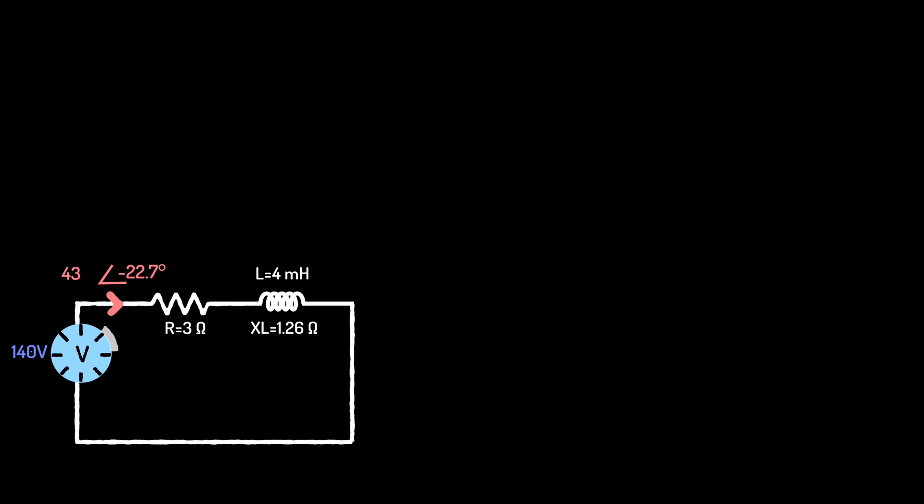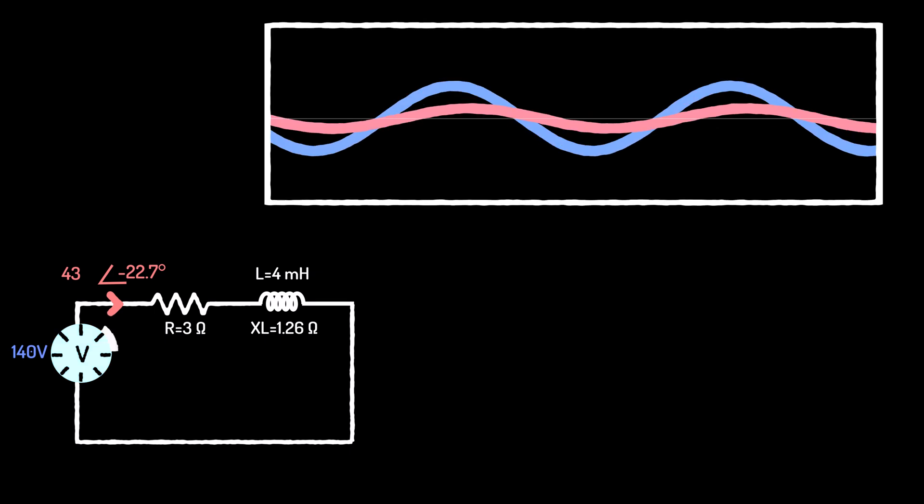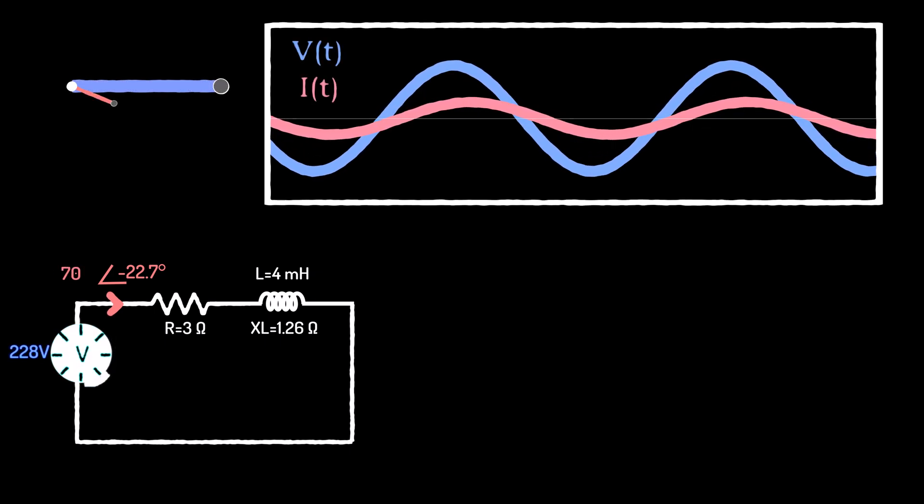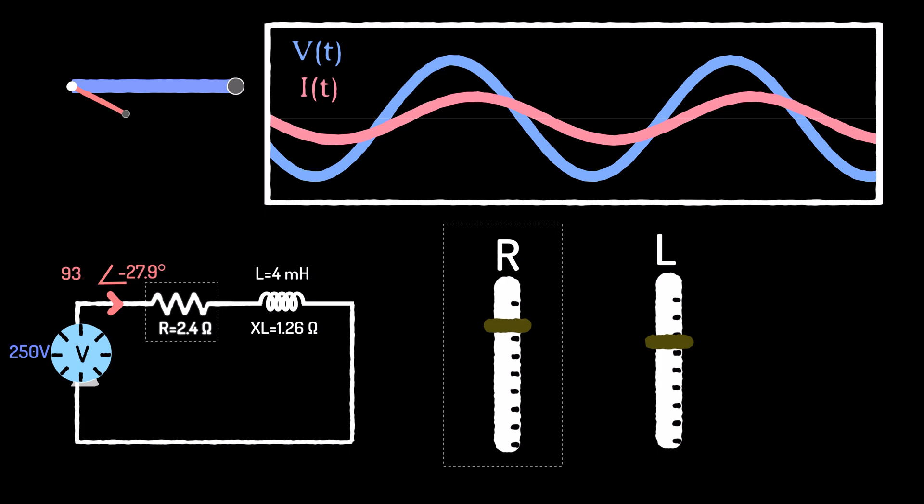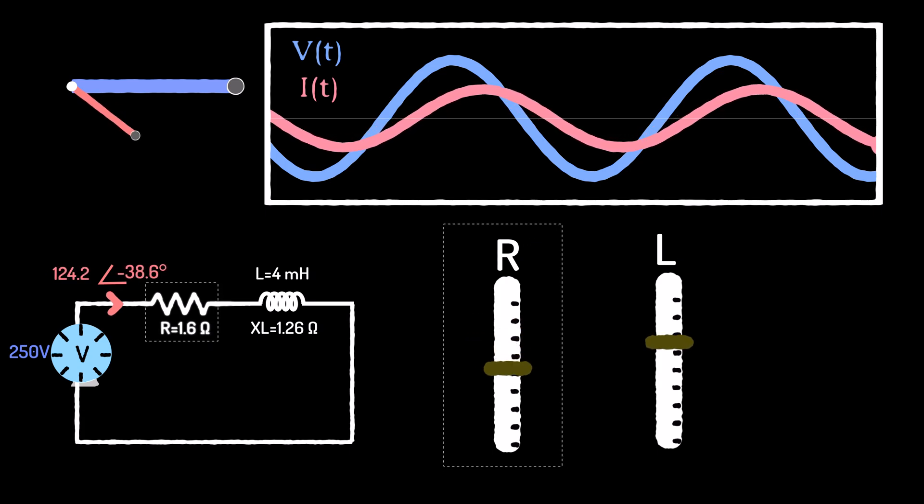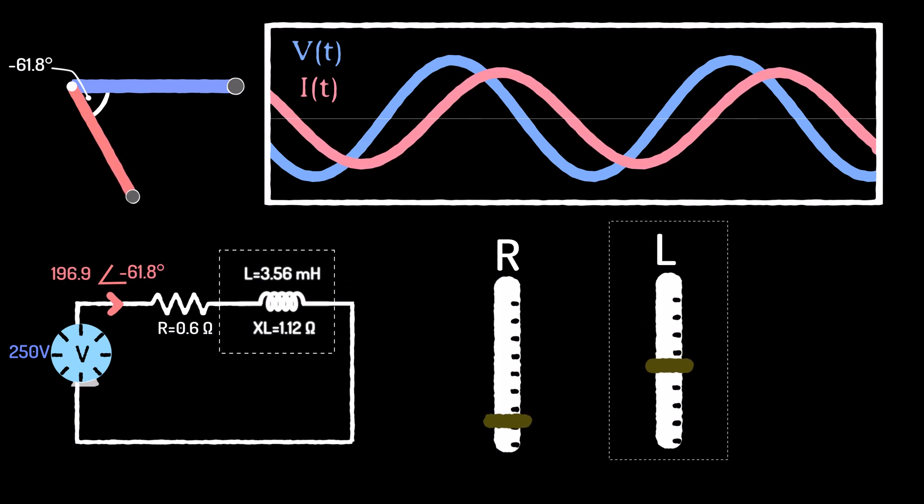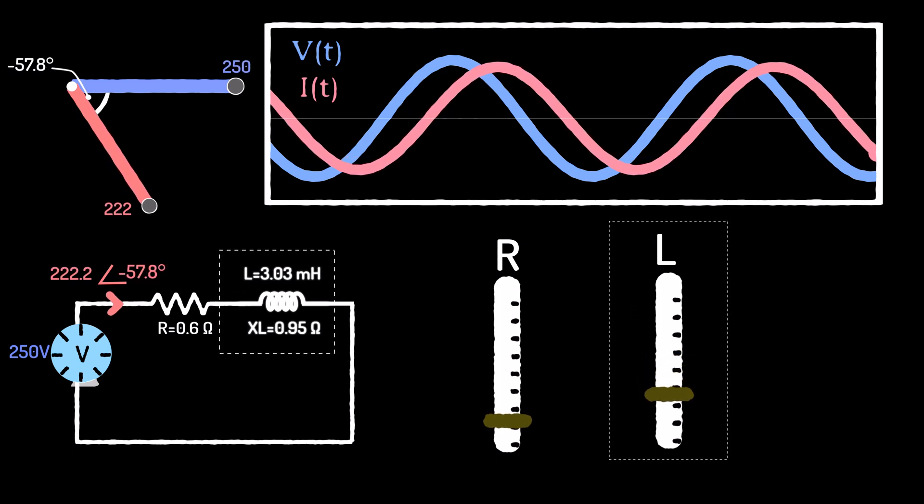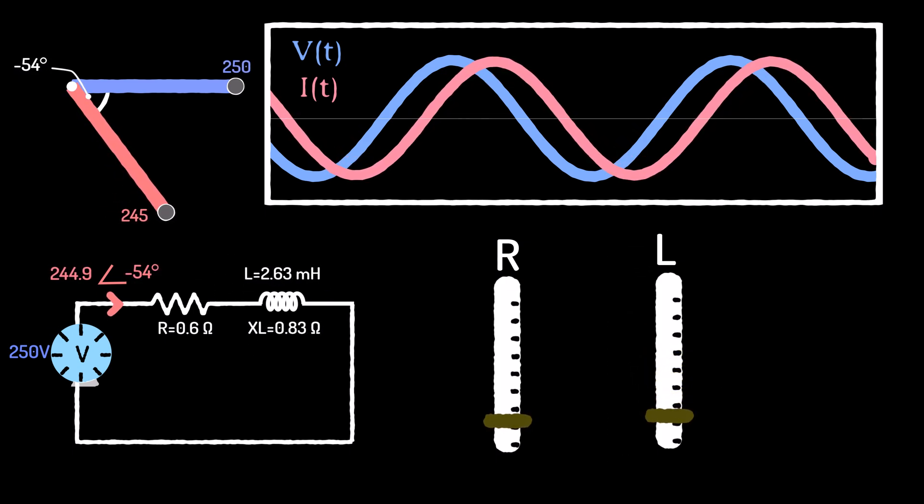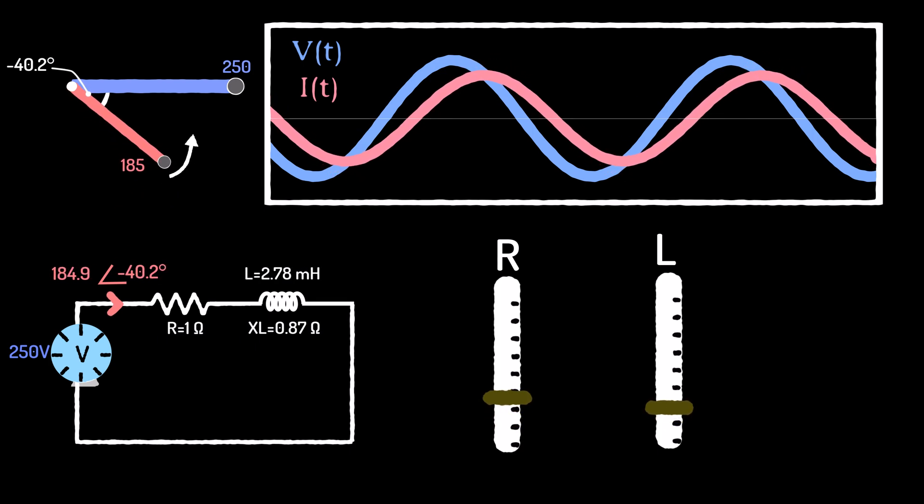We can increase the voltage, decrease the resistance, decrease the inductance, and we notice that the relationship between voltage and current is affected by the mix of resistance and inductance.